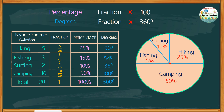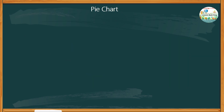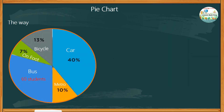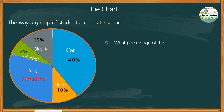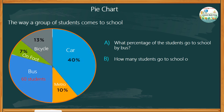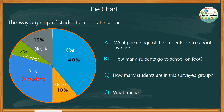And there you have it — creating a pie chart is quite easy, don't you think? Here is a pie chart about the way a group of students comes to school. Study the chart and answer the guide questions. Letter A: What percentage of the students go to school by bus? Letter B: How many students go to school on foot? Letter C: How many students are in the surveyed group? And Letter D: What fraction of the students go to school by metro?